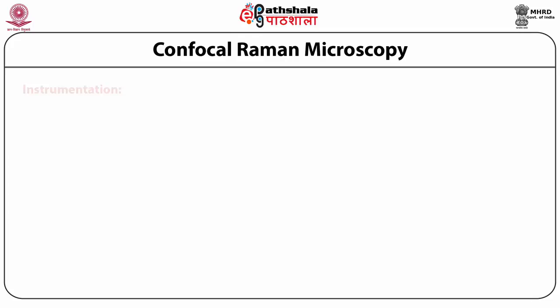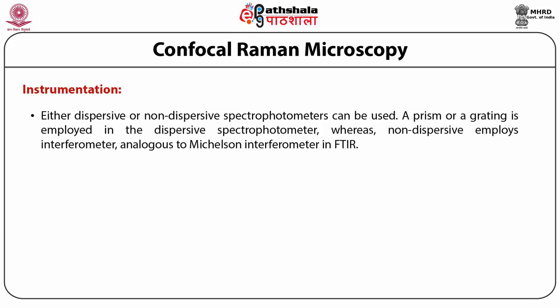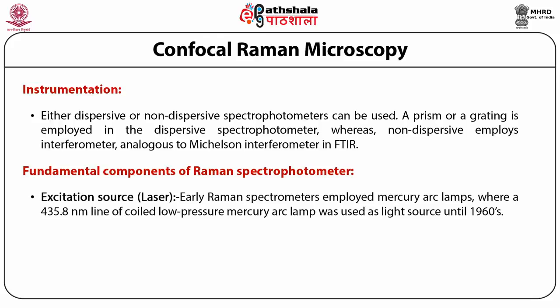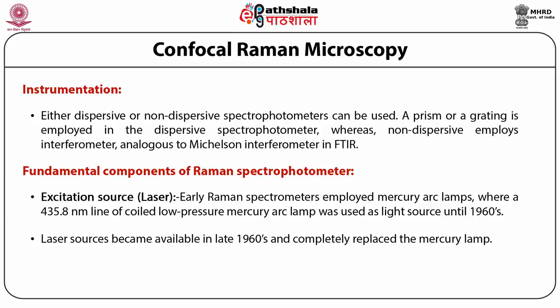Now let us see the instrumentation. Either dispersive or non-dispersive spectrophotometers can be used. A prism or grating is employed in dispersive spectrophotometers, whereas interferometers are used in non-dispersive instruments, analogous to the Michelson interferometer in FTIR. The fundamental components of a Raman spectrophotometer are: first, the excitation source — the laser. Early Raman spectrophotometers employed mercury arc lamps (435.8 nm line) until the 1960s. Laser sources became available in the late 1960s and completely replaced the mercury lamp, providing stable and intense beams of radiation.